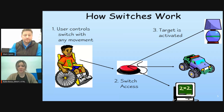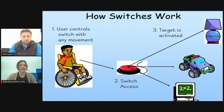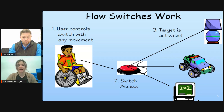When we look at switches, we're looking at what movement does the individual have. How much strength do they have? How much range of motion? We're looking at all of those underlying skills that would allow someone to access the switch, and then looking at what they are trying to access within their environment.